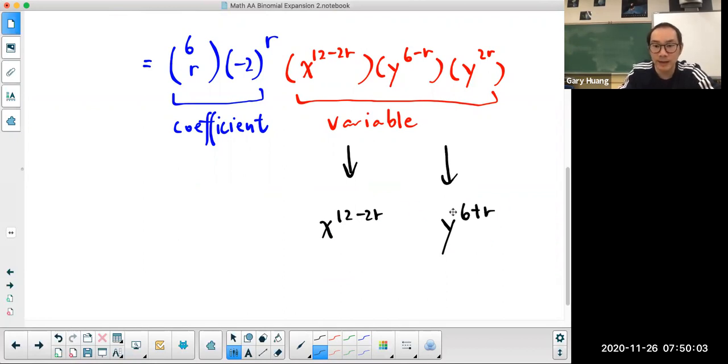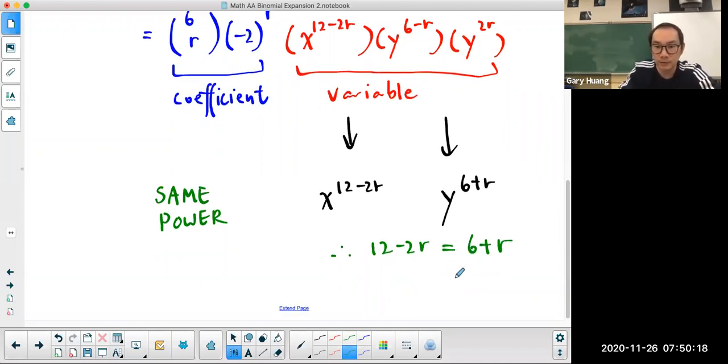And if they are raised to the same power, then 12 minus 2r must equal 6 plus r, which means 3r equals 6, r equals 2.